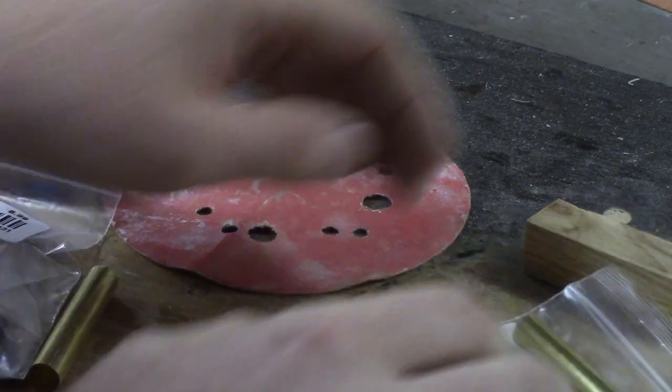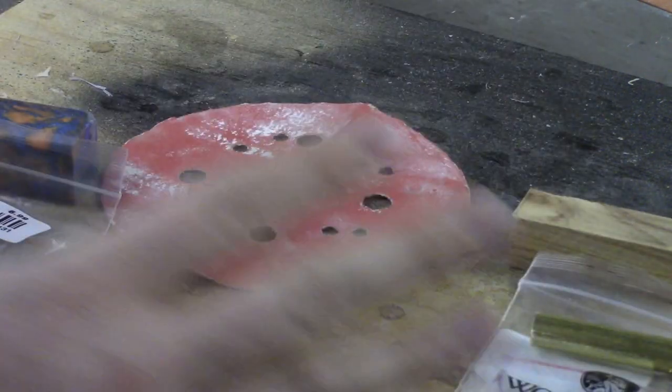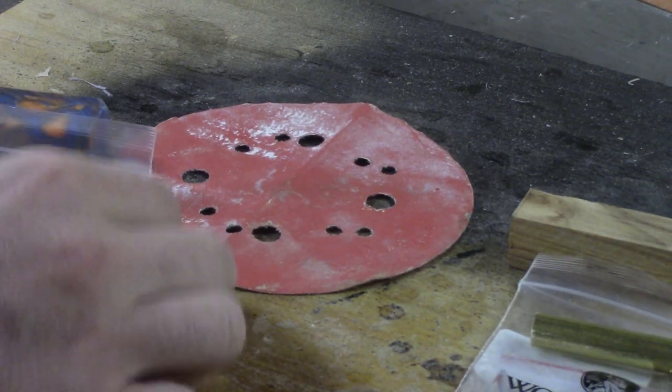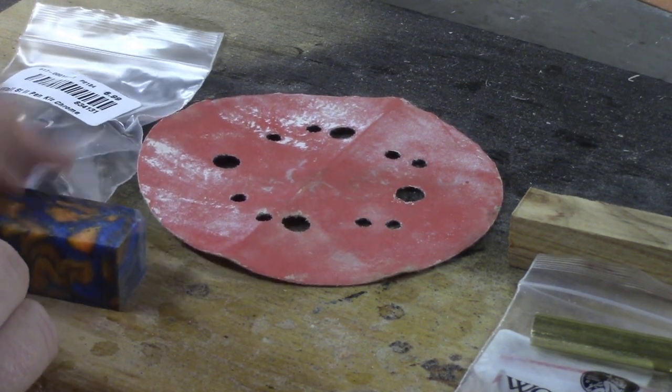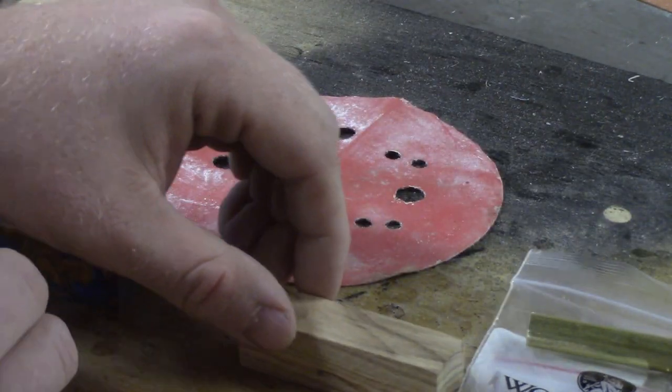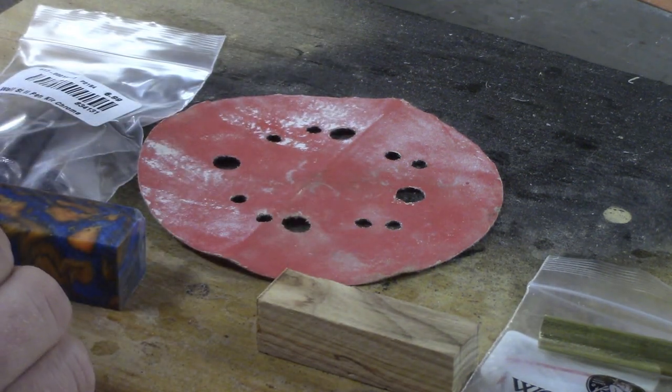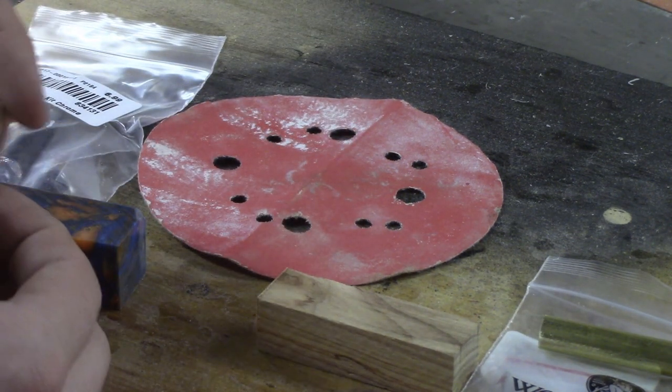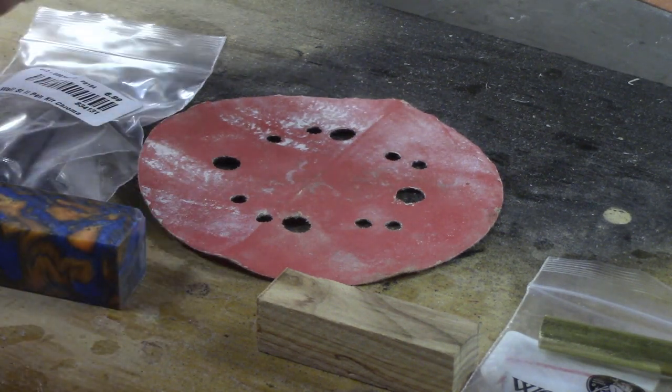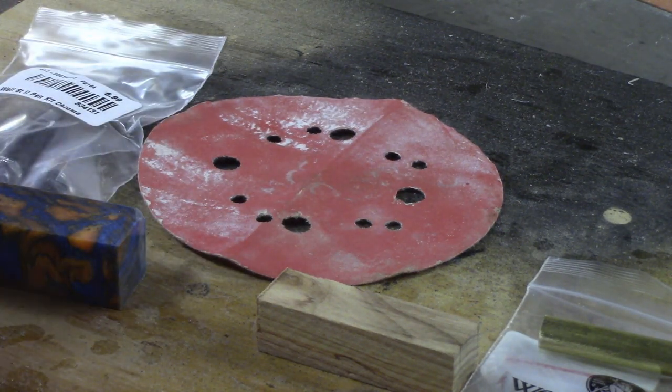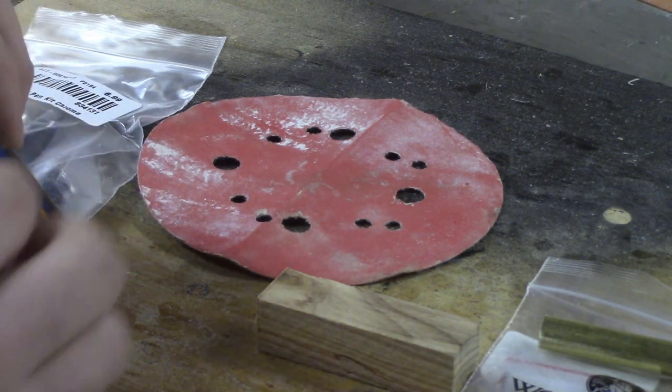The next thing I'm going to do is measure for the length of our blank. Now these two blanks that I have here, the resin blank and the wood blank, are cutoffs from another project. But because of the style of pen that I'm doing, in this case this is a Sierra style, it's actually a Wall Street II but it's just a Sierra style pen, so I have enough.